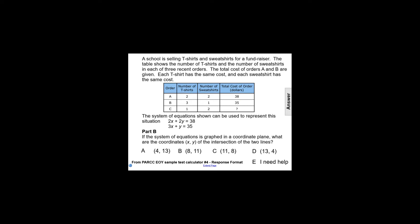A school is selling t-shirts and sweatshirts for a fundraiser. The table shows the number of t-shirts and the number of sweatshirts in each of three recent orders. The total costs of orders A and B are given, and each t-shirt has the same cost and each sweatshirt has the same cost.